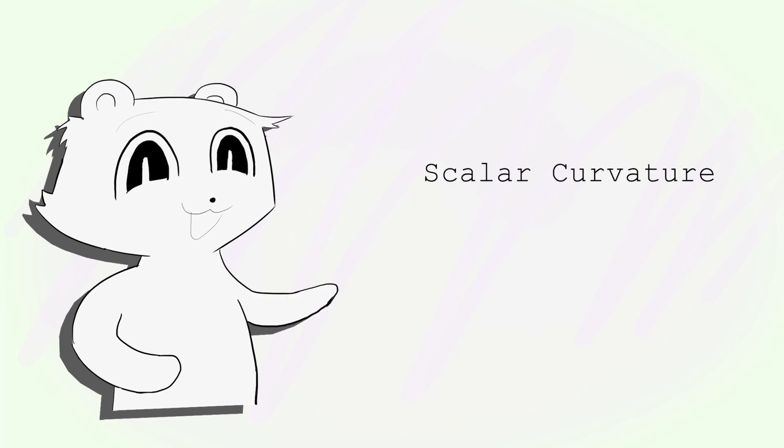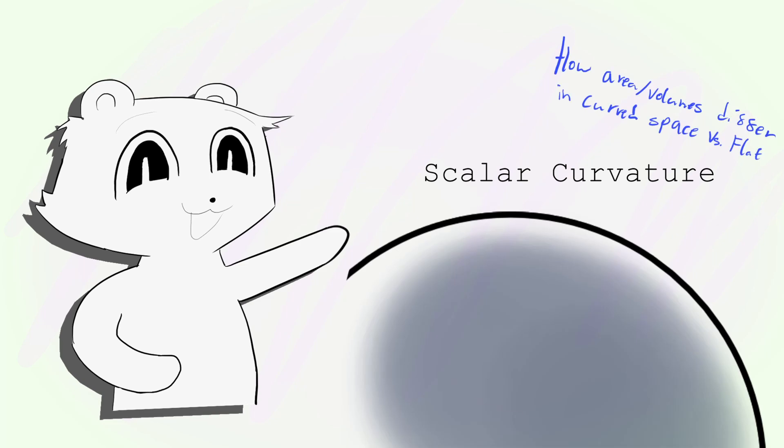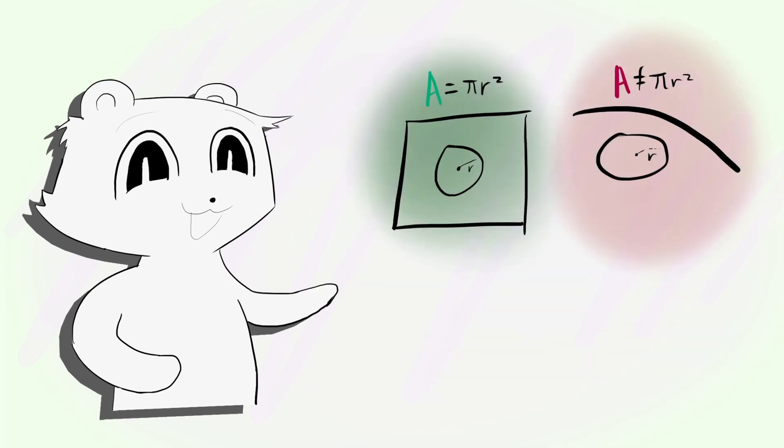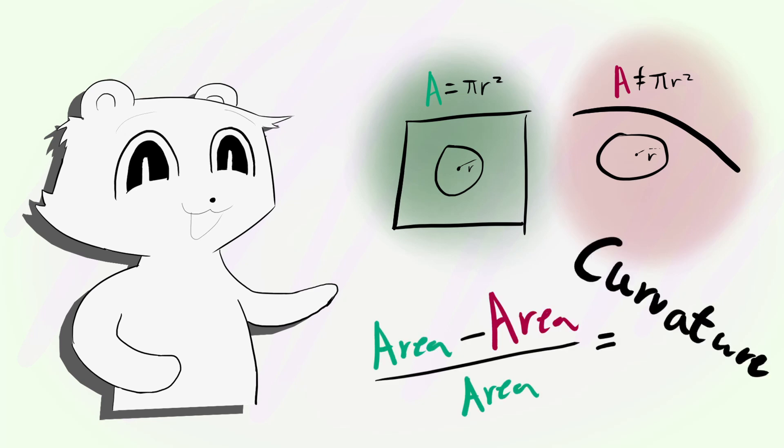The correct approach turns out to be a principle called scalar curvature. It works under the fact that curved surfaces mess with volumes of shapes within them. To actually calculate the curvature, we make a circle centered around that point and subtract the area by the area of a circle of equal radius in flat space.